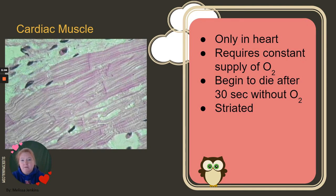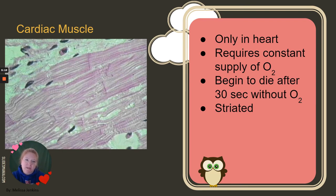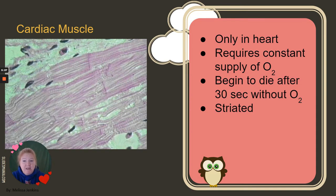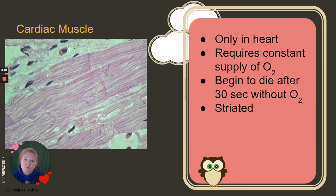Cardiac muscle is only in the heart, and something really important: it requires a constant supply of oxygen. Cardiac muscle cells will begin to die after 30 seconds without oxygen, and that's why heart attacks or myocardial infarctions are so dangerous — they cut off blood supply, heart cells start dying, and that hurts. Cardiac muscle cells are also striated, as you can see in the histology slide.